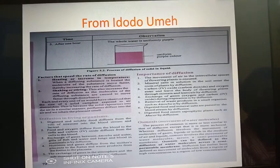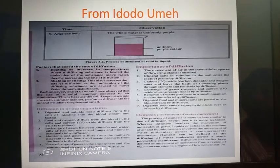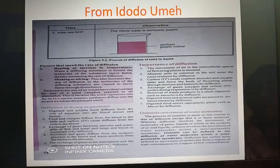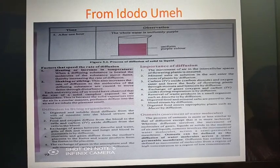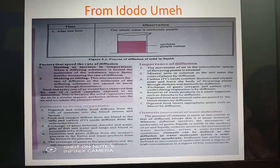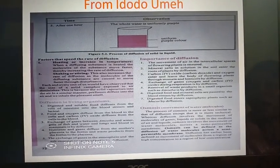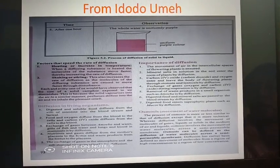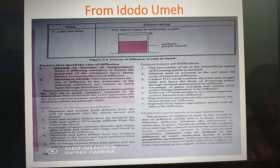Now let us recap our objectives for this lesson. One, we defined the meaning of the word diffusion. Secondly, we demonstrated diffusion in gases. Thirdly, we demonstrated diffusion in solids using potassium permanganate crystals. And lastly, we stated factors that can enhance the rate of diffusion. Thank you. God bless you.